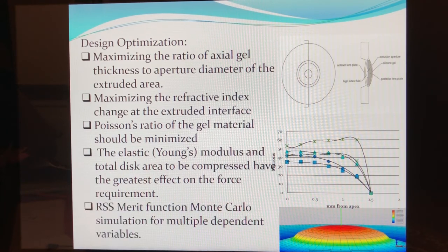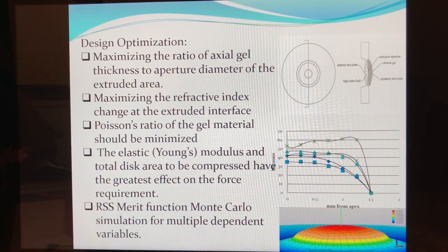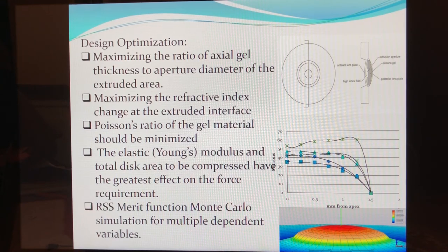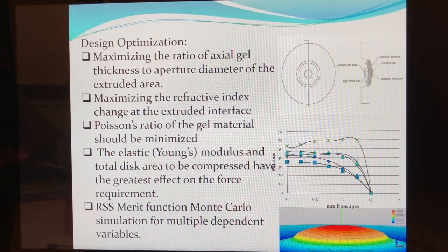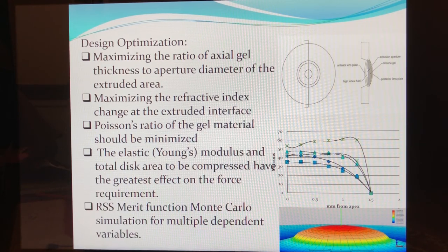We use a root sum square merit function Monte Carlo simulation for the multiple dependent variables. Ultimately, we have a myriad of interdependent design parameters that will all affect the outcome metrics. These can be optimized together by using the Monte Carlo simulation and root sum squared merit functions, which are the output metrics. This gives us exact answers on the dimensions, optical, and mechanical properties of the design.